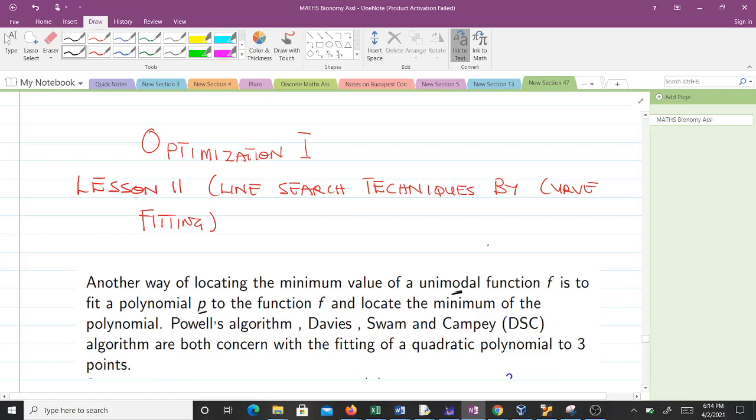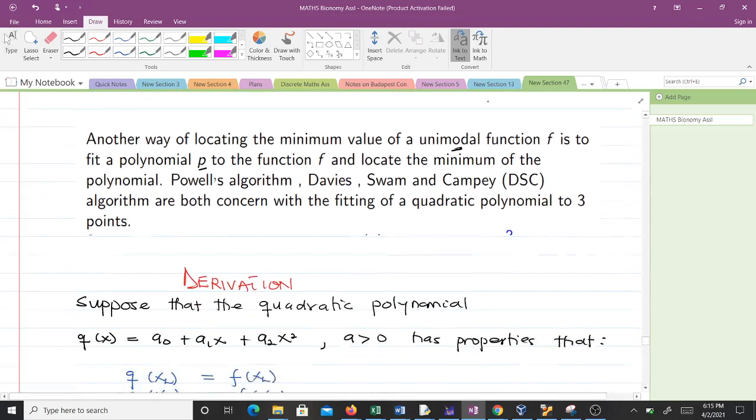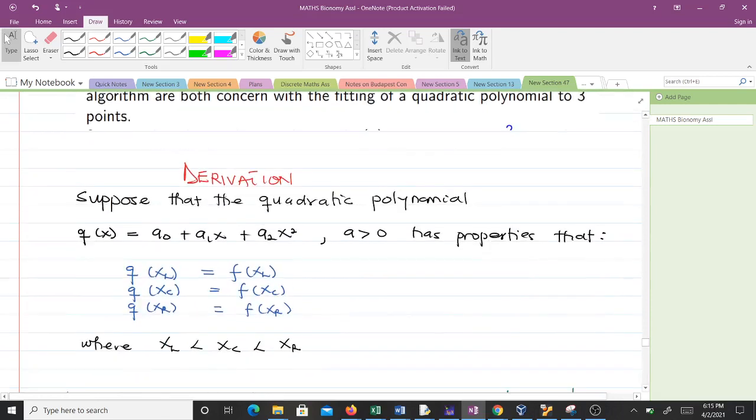We have two algorithms: Powell's algorithm and the Davies-Swann-Campey (DSC) algorithm. They are both concerned with fitting a quadratic polynomial to three points. Let's learn how to derive that.